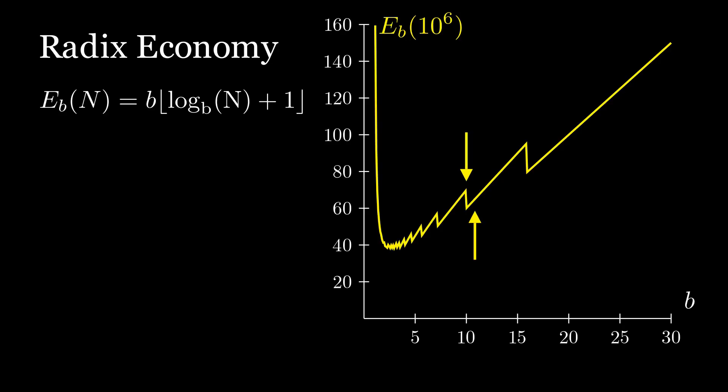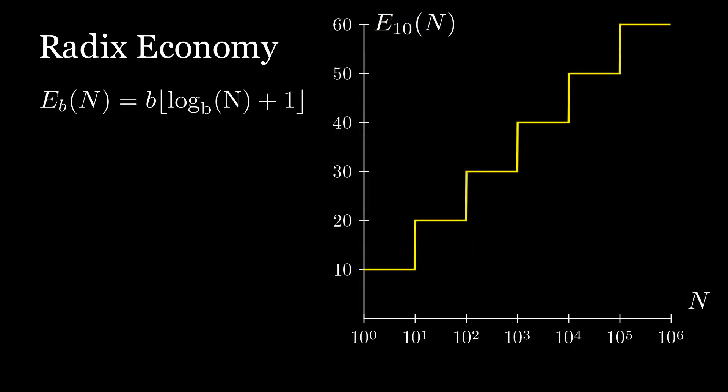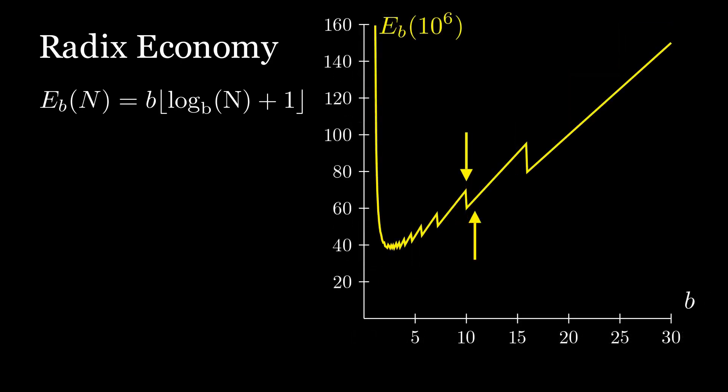We can do better than this. It's kind of hard to tell from the graphs, but those jumps when we add a digit for larger numbers get relatively smaller and smaller the more digits we have. So we can take a limit as n approaches infinity, and we should get a smooth function. That limit looks like this.